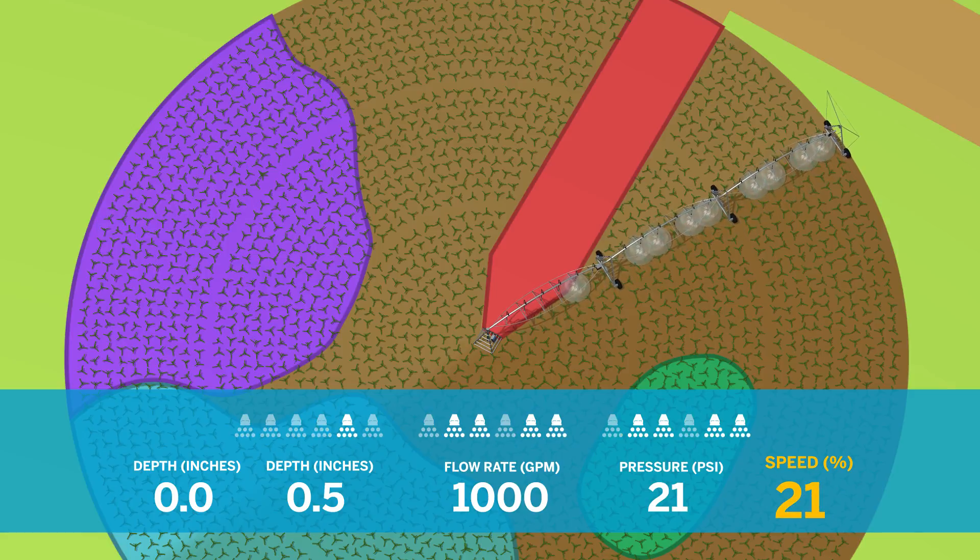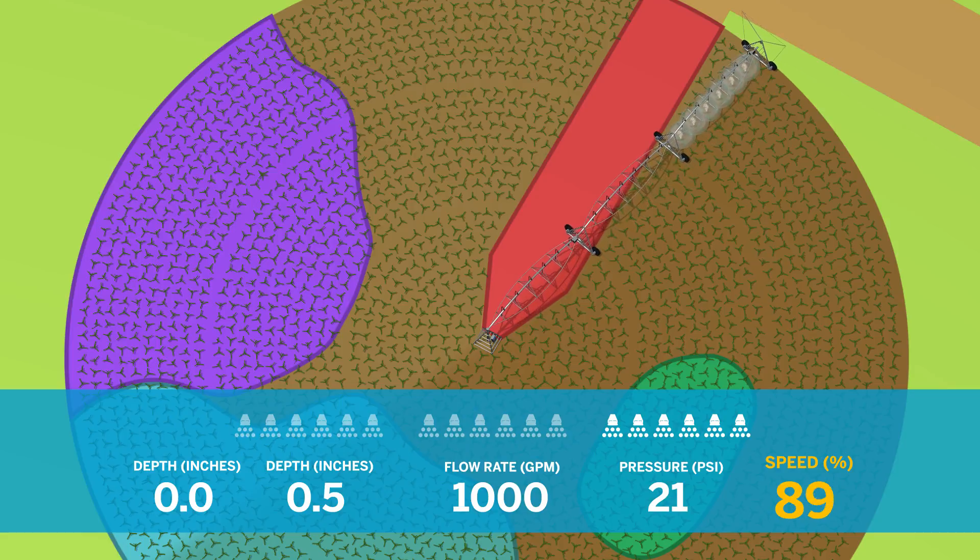When a no-spray area spans across the entire pivot, the system speeds up to ensure minimal application while maintaining pressure.